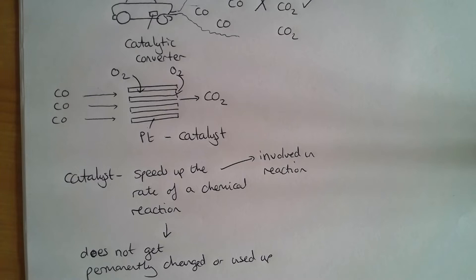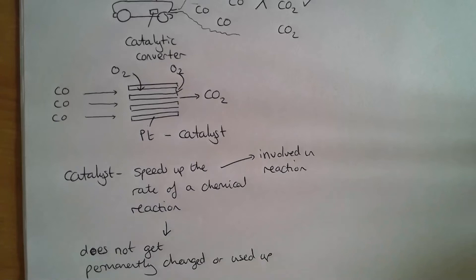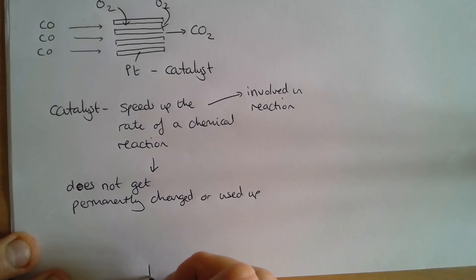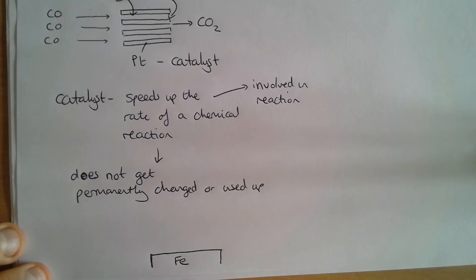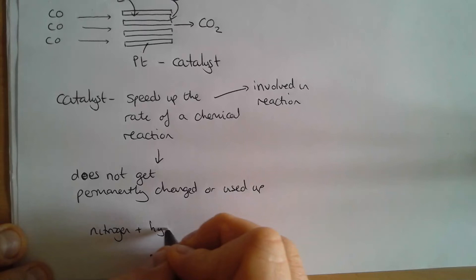Another example of a catalyst is iron in something called the Haber process. The Haber process is a really important reaction that allows us to make ammonia, which is a very important chemical used particularly in making fertilizers. The iron helps nitrogen and hydrogen react together much more quickly than they would normally do to make ammonia.